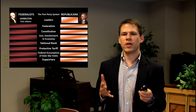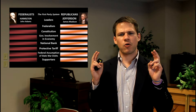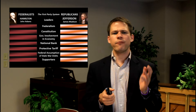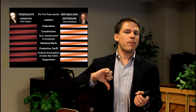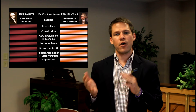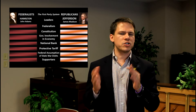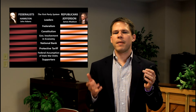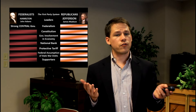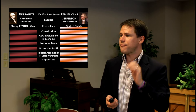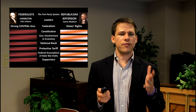Hamilton and John Adams were leaders of the Federalist Party. Meanwhile, the Jeffersonian Republicans — or Democratic Republicans — were led by Jefferson and Madison. Madison was originally a Federalist but crosses over due to his Jeffersonian view of the Constitution. The Federalists wanted a stronger central government, whereas the Jeffersonians believed in states having rights above the central government.